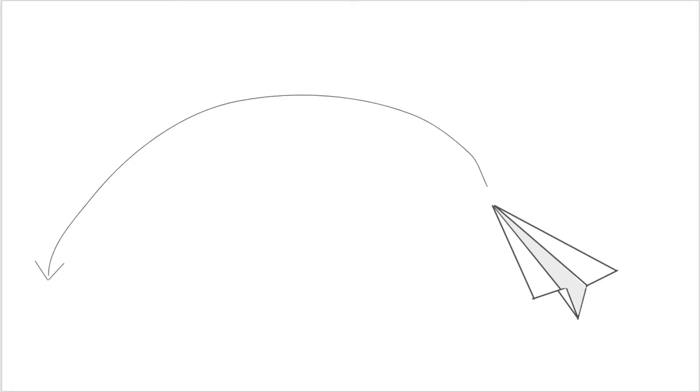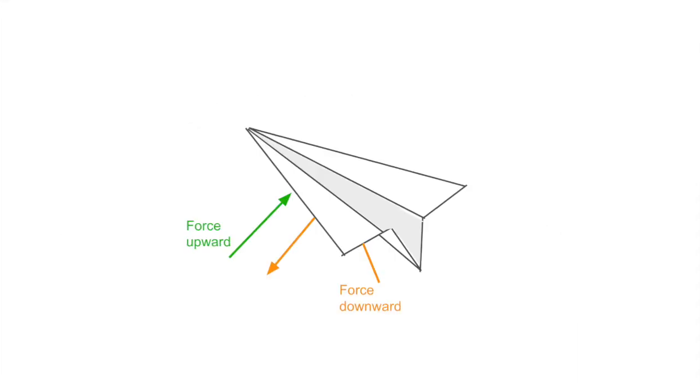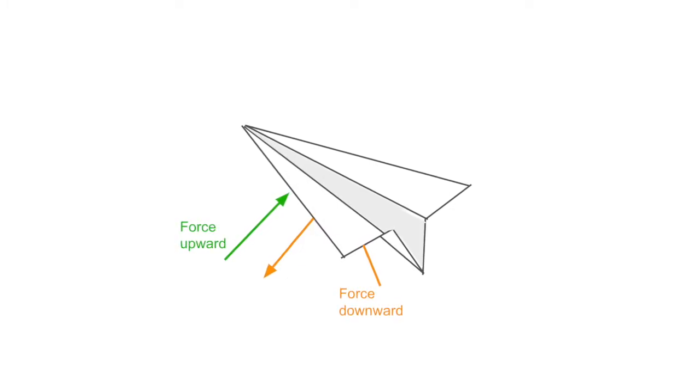For paper airplanes, however, they are thrown upwards at first and travel in a parabolic path. So lift is created by using Newton's third law. Newton's third law states that every action has an equal and opposite reaction. Therefore, every force must have an equal and opposite force.